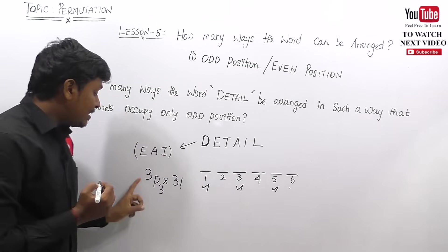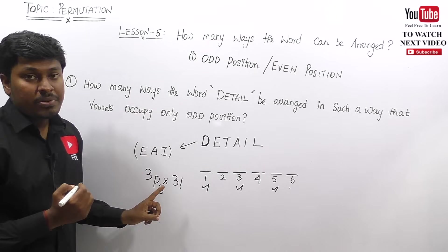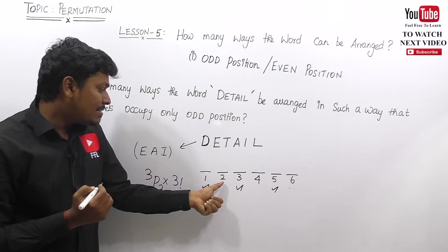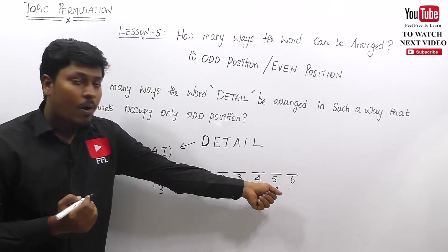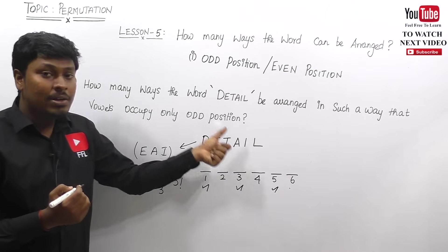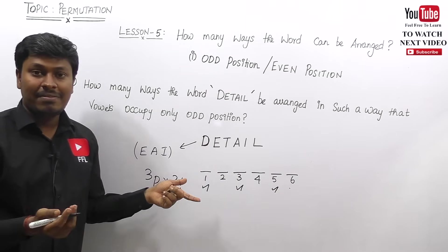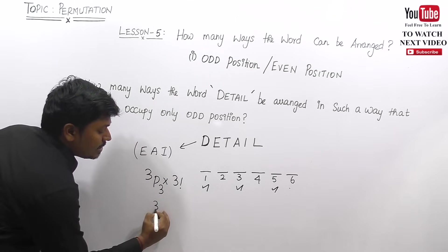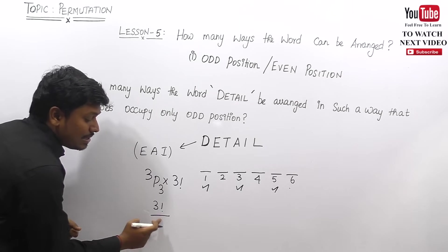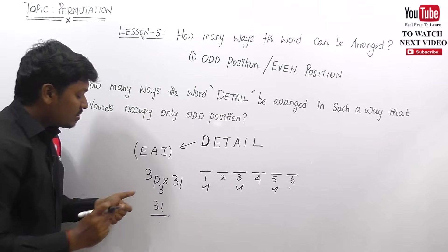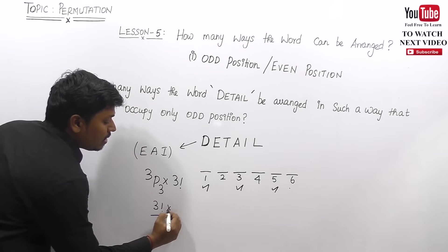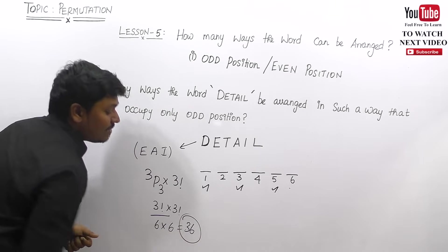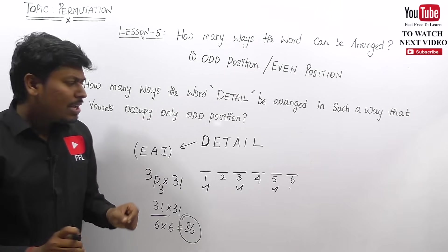The three vowels go into the three odd positions — one, three, five — giving 3P3. The three consonants D, T, L fill the three even positions in 3! ways. So 3P3 = 3!/0! = 6, and 3! = 6, giving 6 × 6 = 36. The final answer is 36.